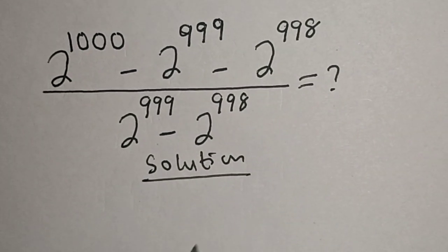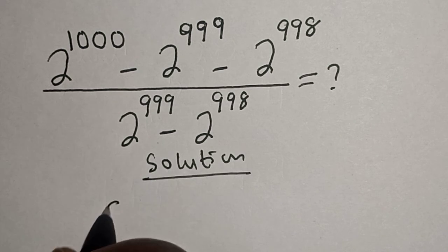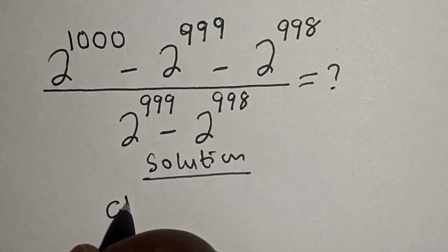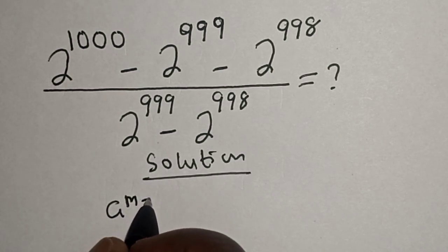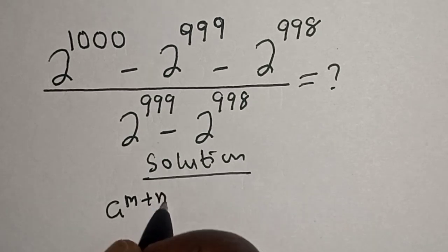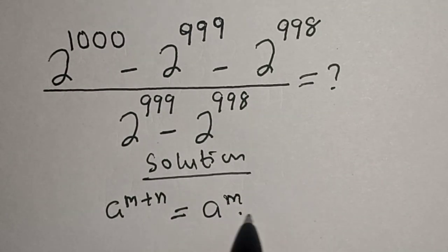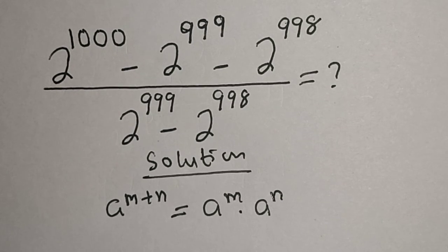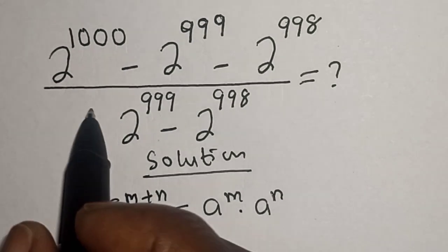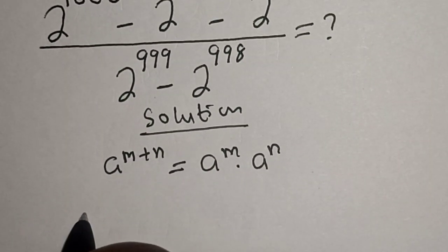We should always remember this exponential rule: a raised to power m plus n is equal to a raised to power m multiplied by a raised to power n. Then 2 raised to power 1000 can be written using this rule.